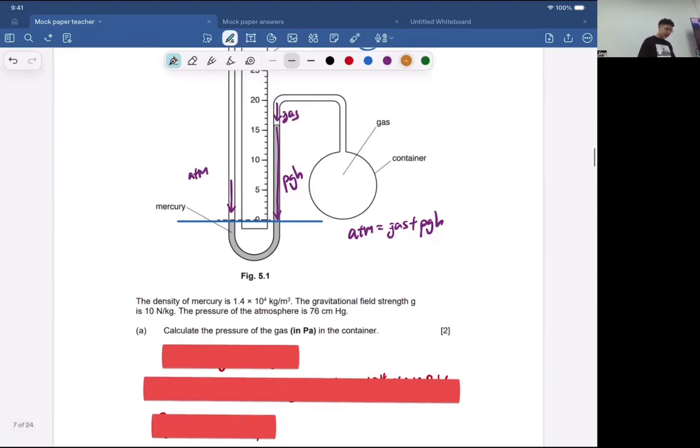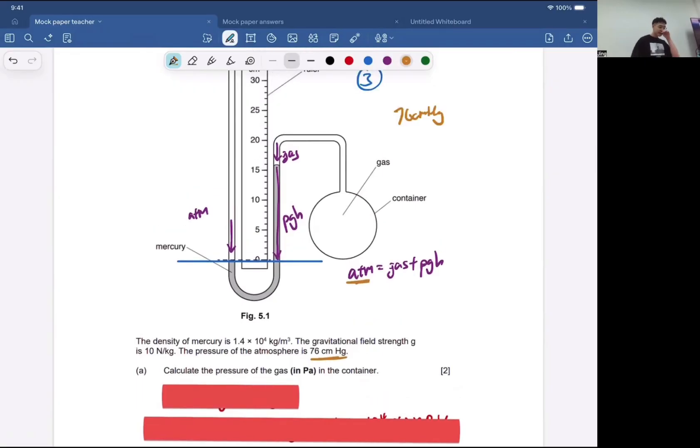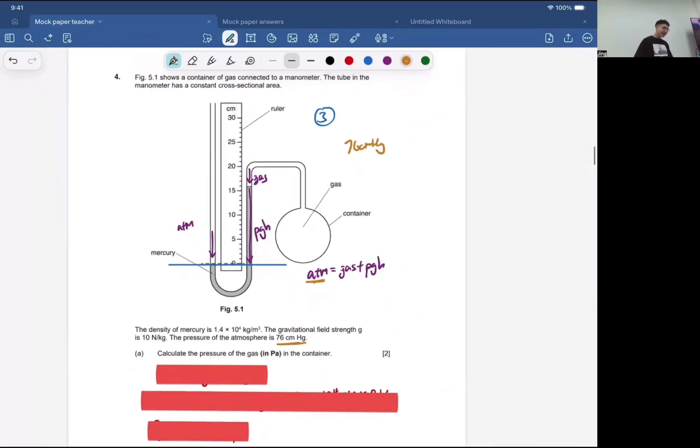Now, the issue is the atmosphere they give us is in CMHG. So how to convert CMHG into Pascals? Guys, I'll crash out if I explain this one more time. So this is the last time I explain.